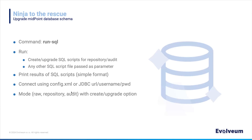After you've pre-upgraded or prepared your MidPoint instance, you should shut it down and then upgrade the database schema. There's a command called `run SQL` that will allow you to execute SQL scripts that are bundled inside the distribution, or any arbitrary SQL scripts. This command uses the config.xml by default to connect to your database. If that's not available or you'd like to specify something else, there are options for JDBC URL, username, and password. There are also options to search for and find the correct upgrade scripts for the database or audit.